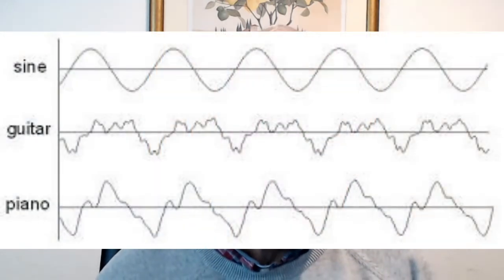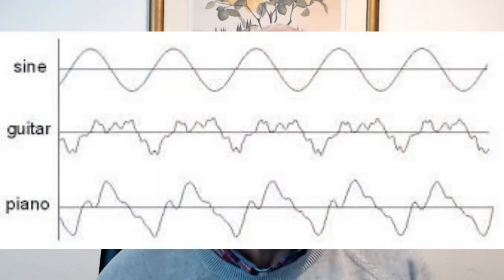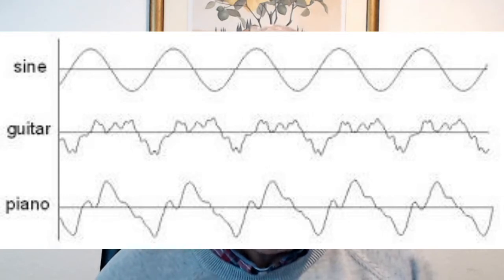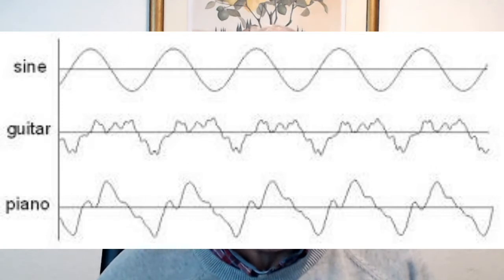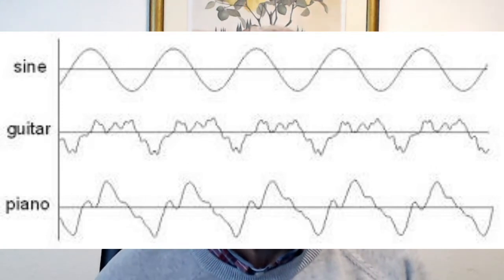These waveforms show clearly different sorts of asymmetry — a guitar note and a piano note, compared to the pure electronically created sine wave.